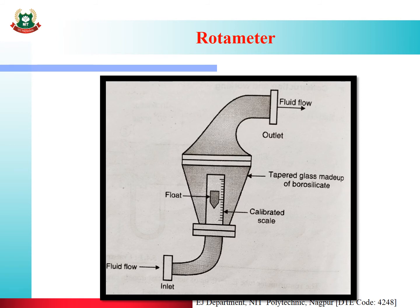Now the rotameter. This is the constructional details of rotameter. Fluid flows in from the inlet, rises through the tapered glass tube (made up of borosilicate glass) up to the calibrated scale, where a float is placed. The output is the fluid flowing out from the outlet.